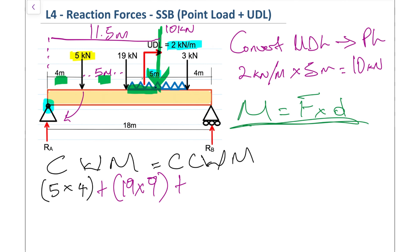Plus, moving on to that UDL force, we're going to use the point load for the UDL, which is the 10 kilonewtons, so we get 10 kilonewtons multiplied by its distance from RA, which is 11.5. Then finally we have that 3 kilonewtons, plus 3 kilonewtons, and its distance from RA is 5 plus 5 plus 4, so that's 14 meters. The last force is RB, which is trying to go counterclockwise, so we have RB multiplied by 18.